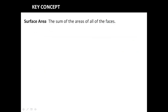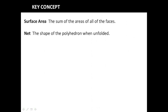The surface area is the sum of the areas of all the faces. On that pyramid, I'm going to have the polygon at the bottom and all of the isosceles triangles around the side. The shape of the polyhedron, when unfolded, is the net.